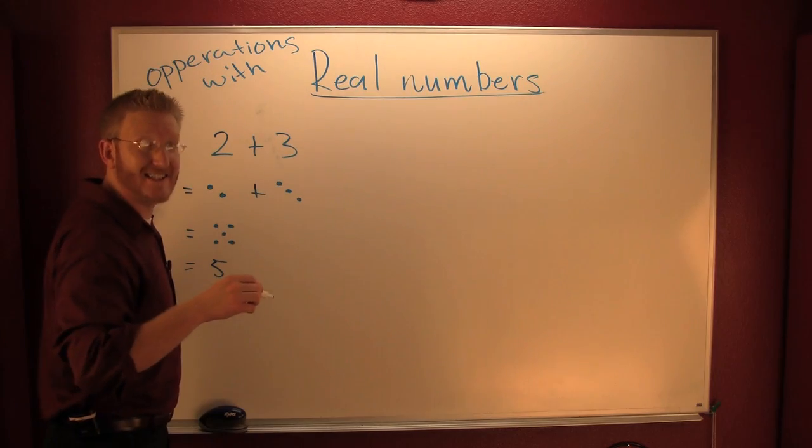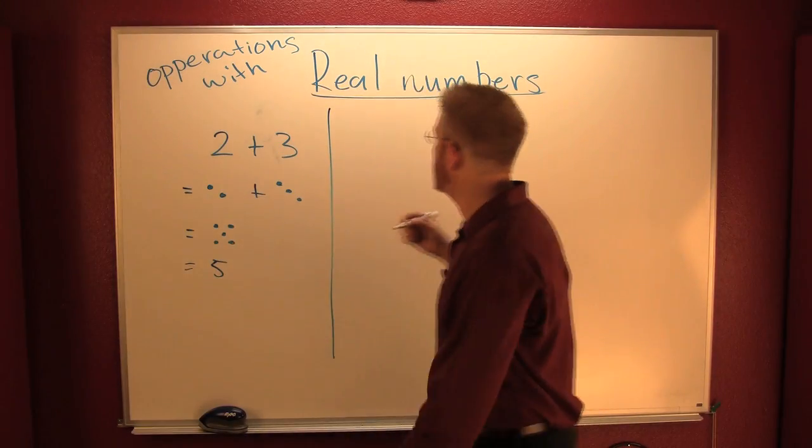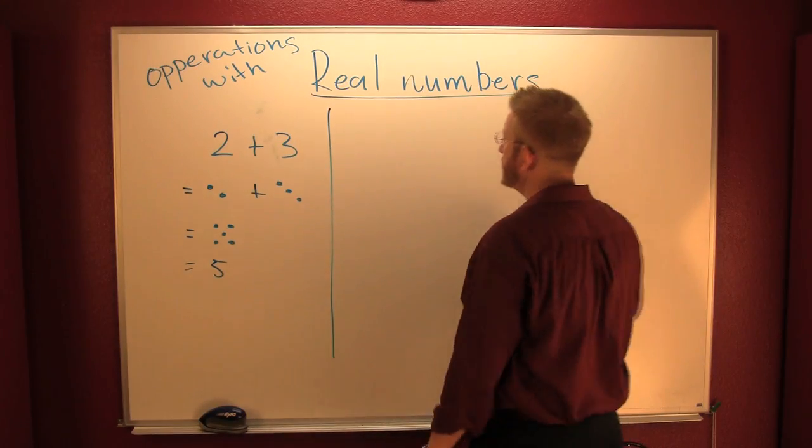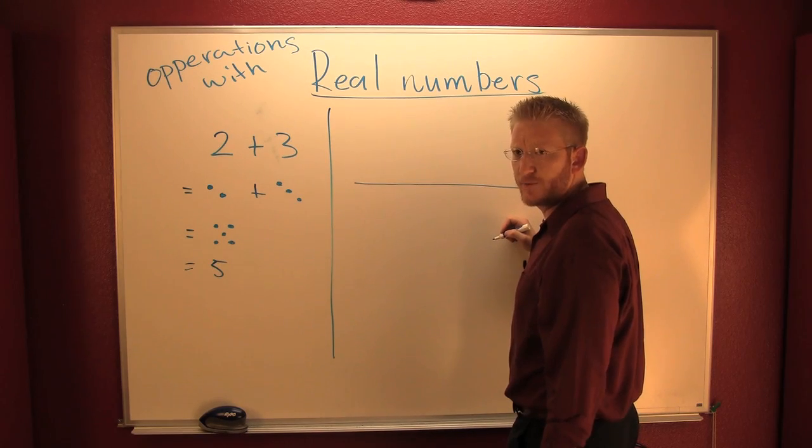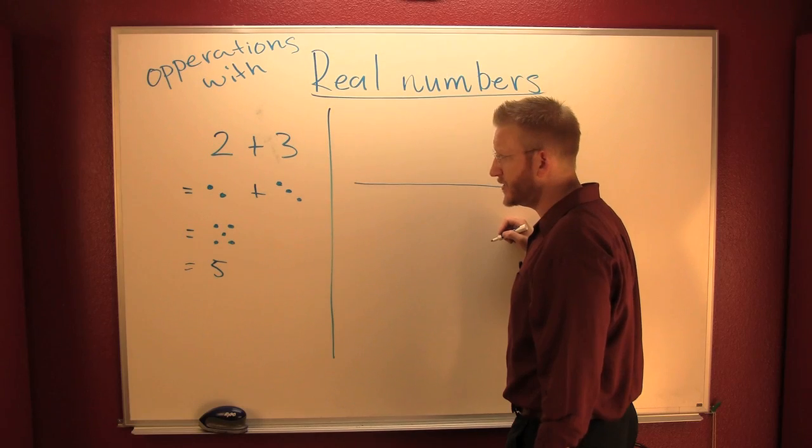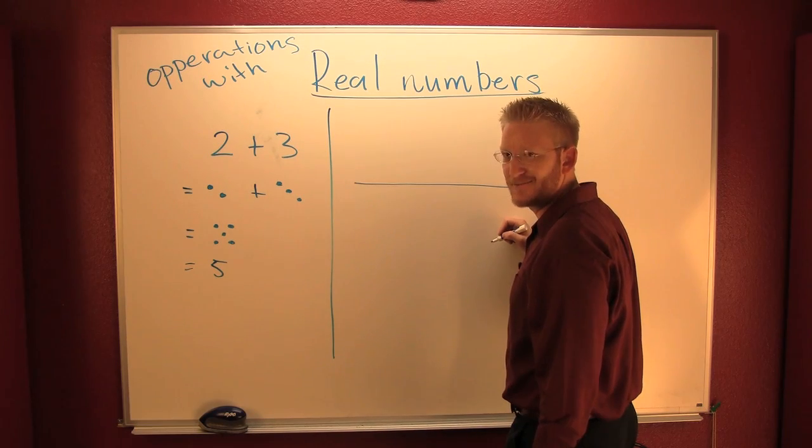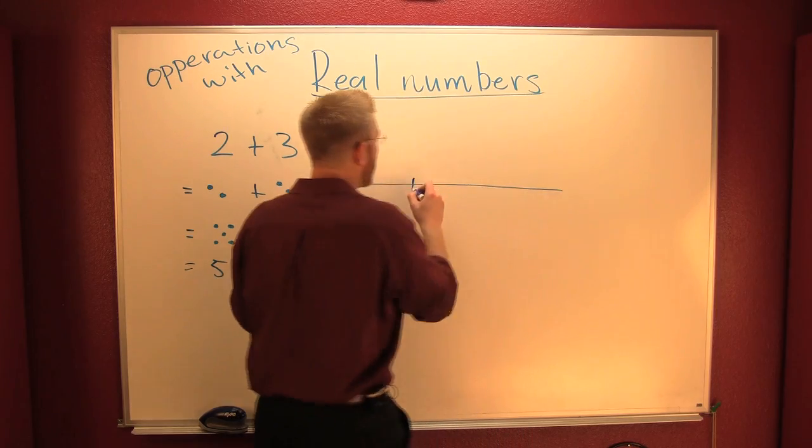Another way that you can see this addition is on a number line. What are we doing? We're adding signed numbers. They have the same sign. What do you do? Add them. That's right. You add them. So I'm gonna start out here at zero.